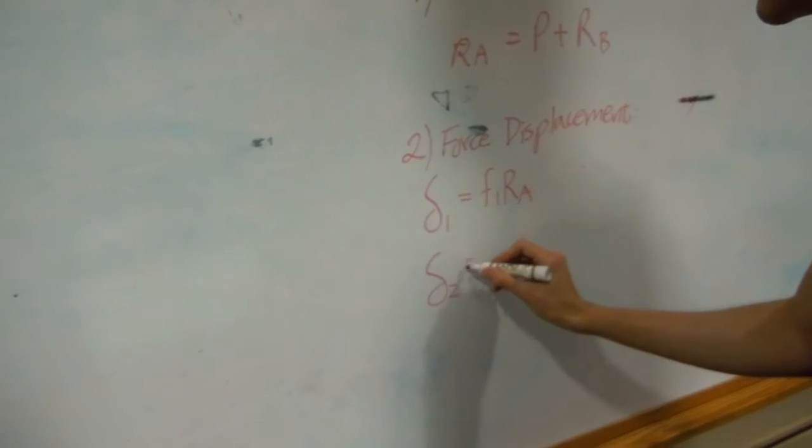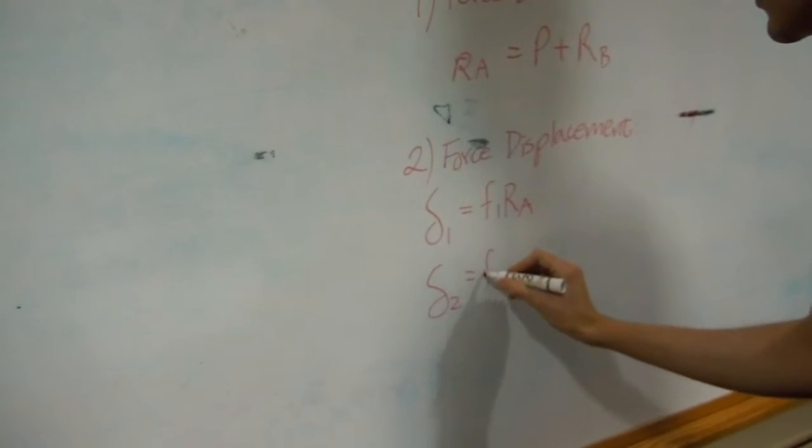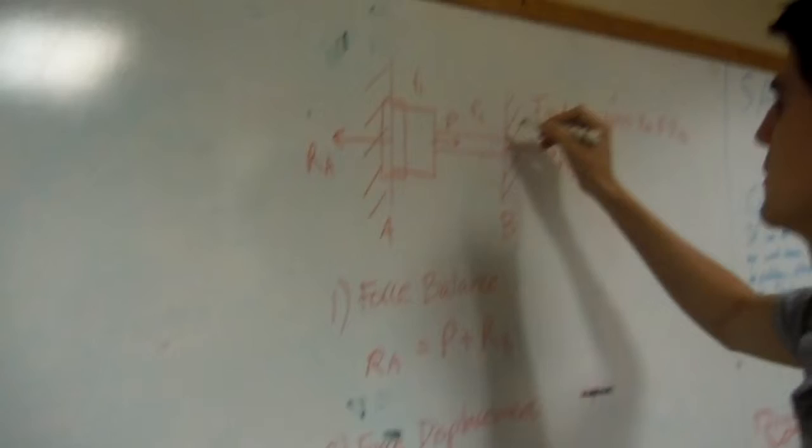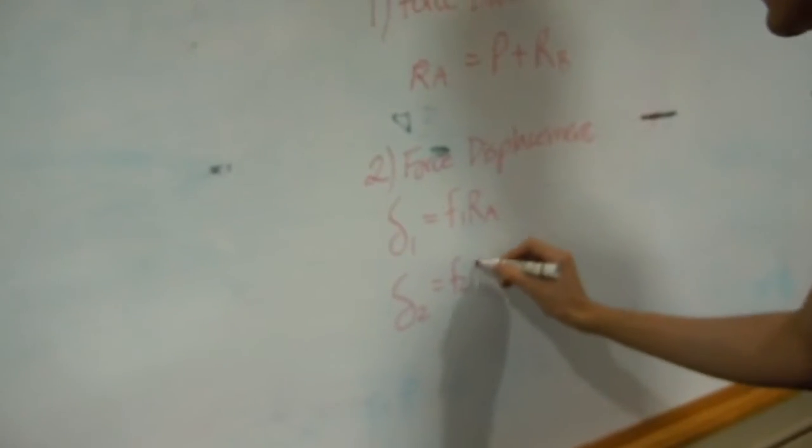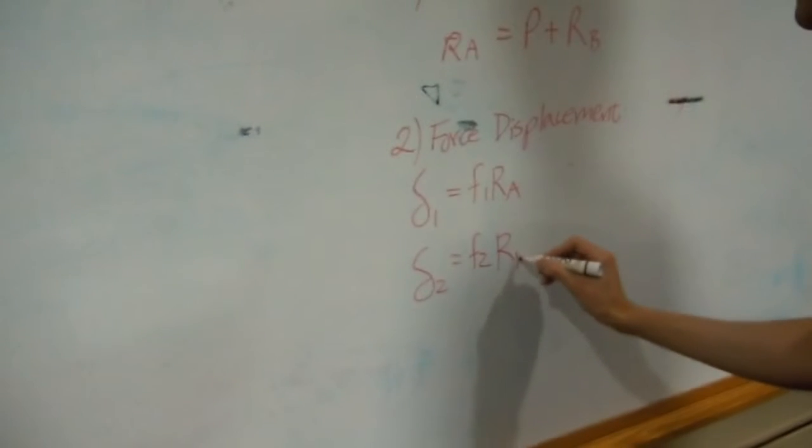Delta 2 equals alpha 2. We're analyzing this part. Times Rb. And the third step.